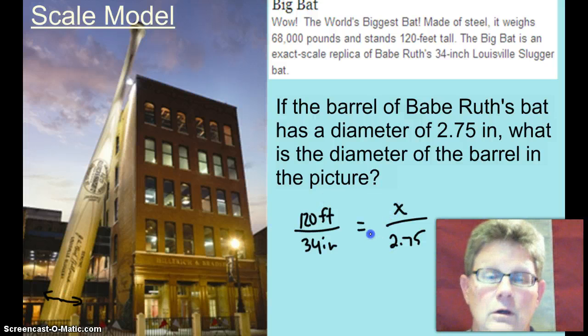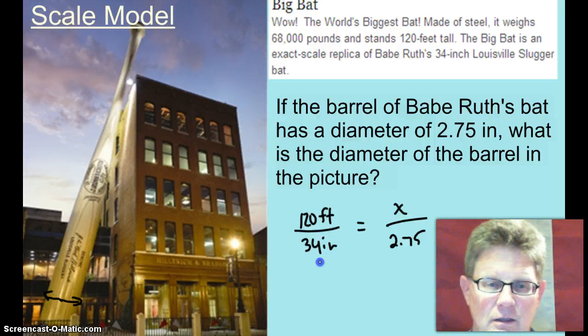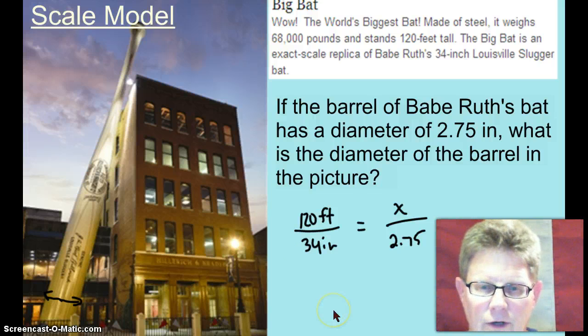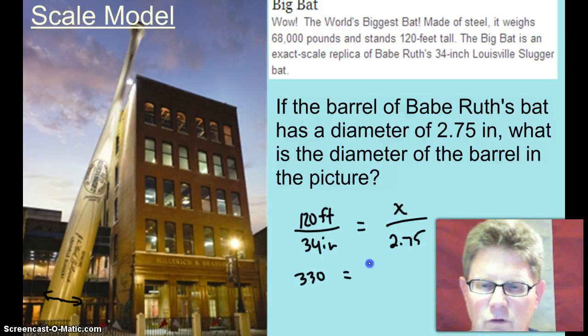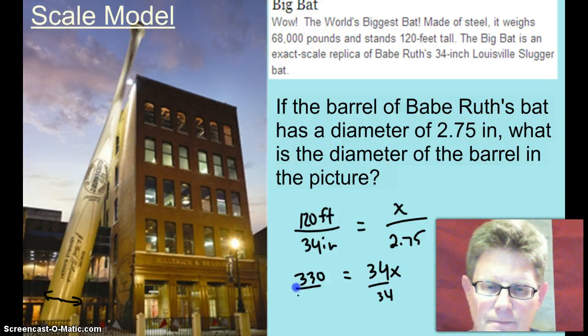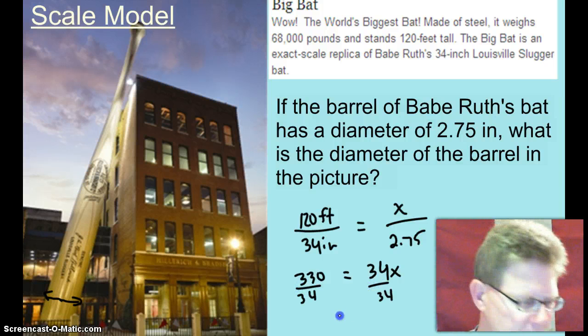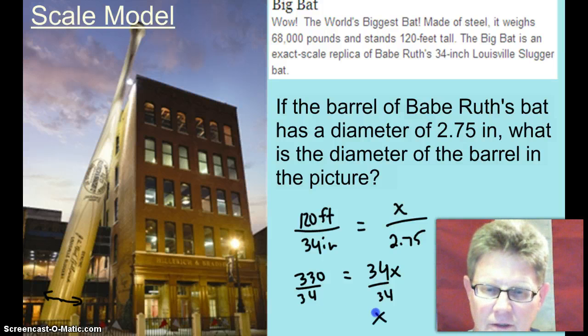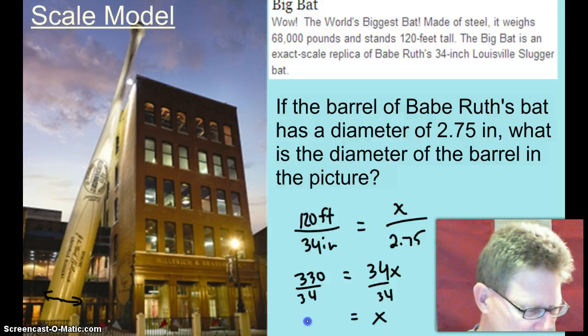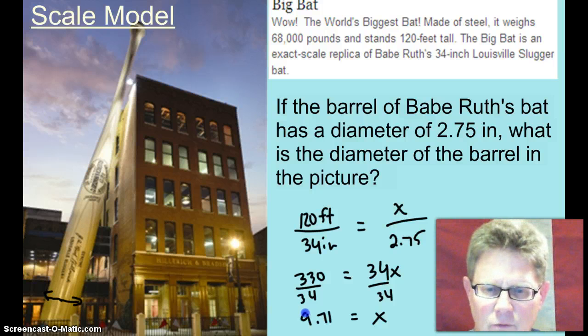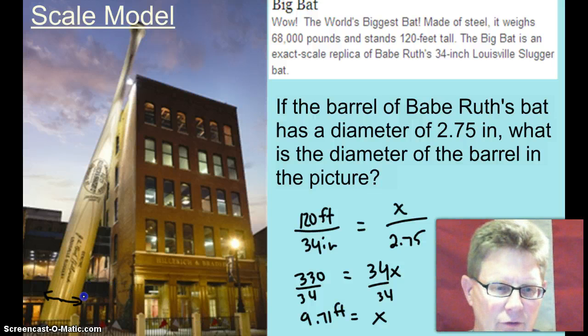So you're going to cross multiply and divide. I'm going to pause it again. When I cross multiply, I get 1530 equals 34x, divide both sides by 34, looks like it's just under 10. It is approximately 9.71 feet across that bat in the model. That's huge.